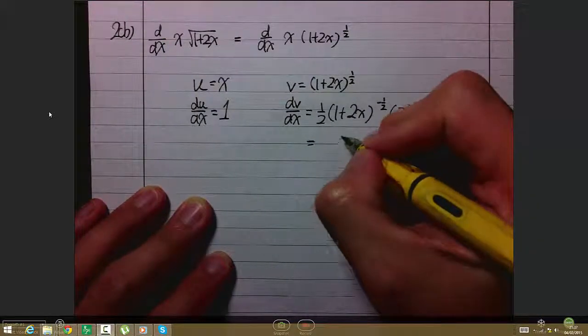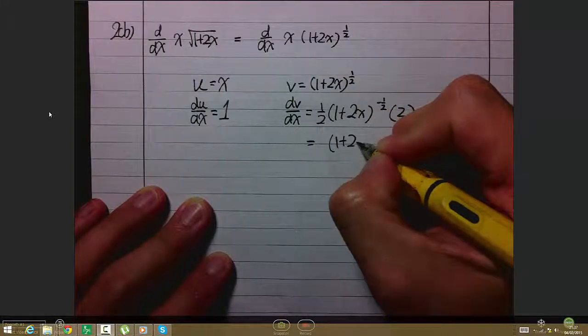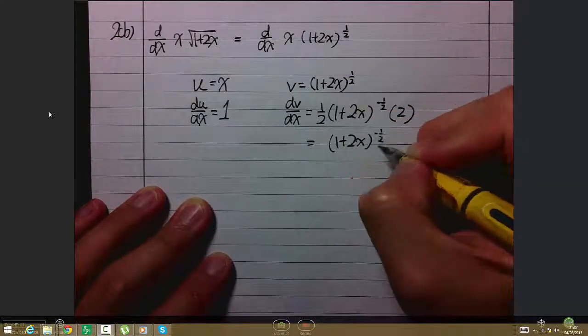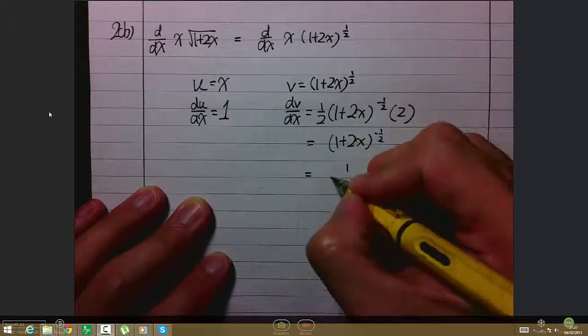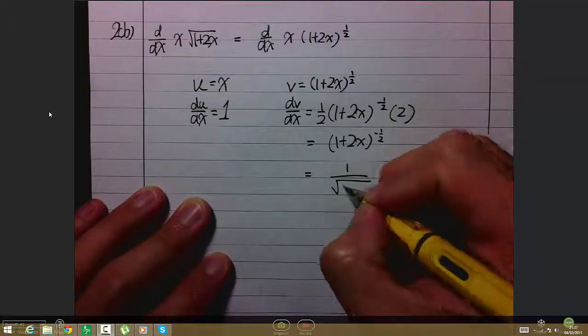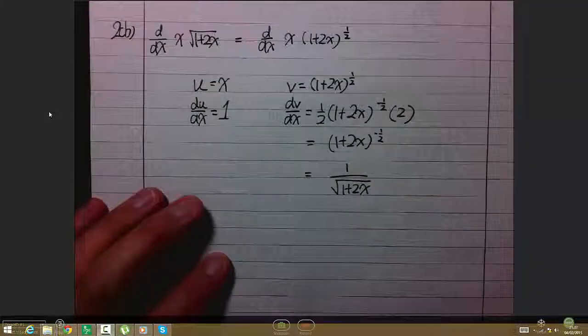So the 2 cancels. I'm left with (1+2x)^(-1/2). To write it nicely, this is 1/√(1+2x).